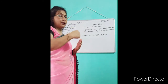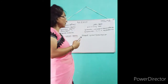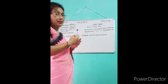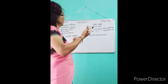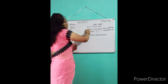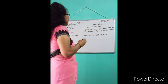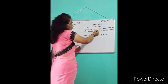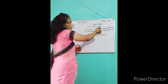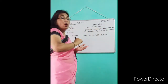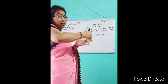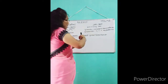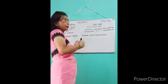राम खाना खा रहा है — खाना क्या हुआ? क्रिया. He is eating — eat क्या हुआ? क्रिया. I am running — run क्या हुआ? Verb. So there are two types of verb: transitive verb and intransitive verb. Transitive verb — सकर्मक क्रिया — requires an object. कर्म सकर्मक, जिसके साथ कर्म जुड़ा हुआ हो, उसको transitive verb कहते हैं.